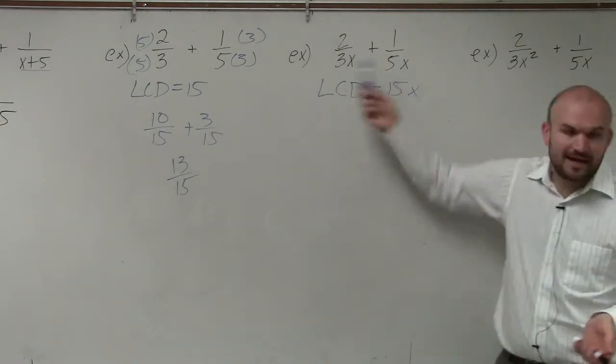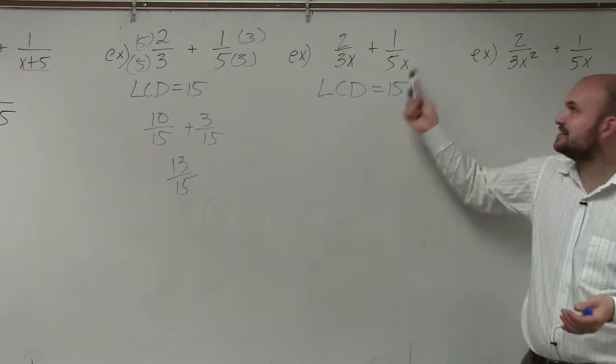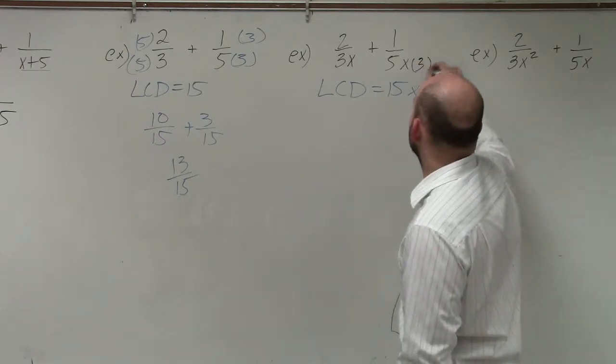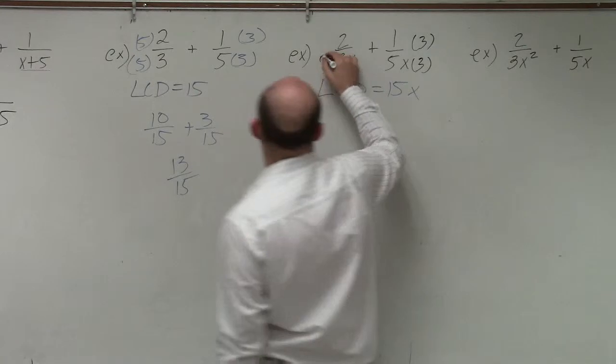So now, if you guys notice, these already have x's in there, so we're cool with that. We just need to multiply by our denominator again, which is going to be 3 over 3, our equivalent fractions.